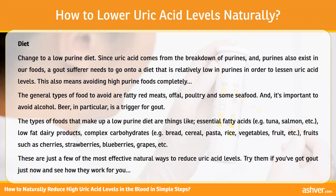And it's important to avoid alcohol — beer in particular is a trigger for gout. The types of foods that make up a low-purine diet include: essential fatty acids such as tuna and salmon; low-fat dairy products; complex carbohydrates such as bread, cereal, pasta, rice, vegetables, and fruit; and fruits such as cherries, strawberries, blueberries, and grapes.